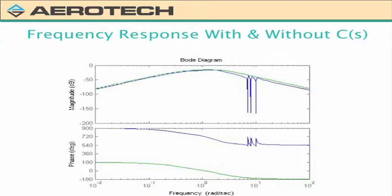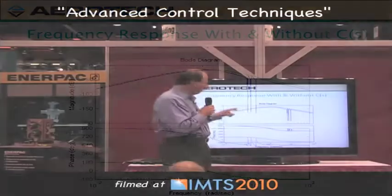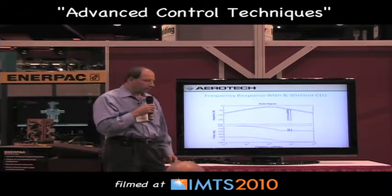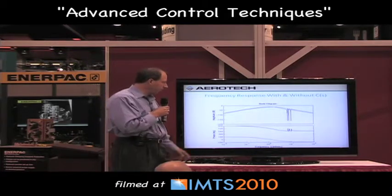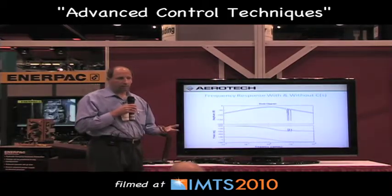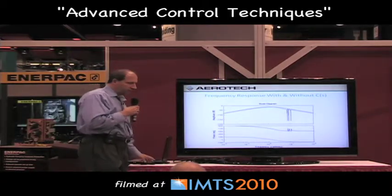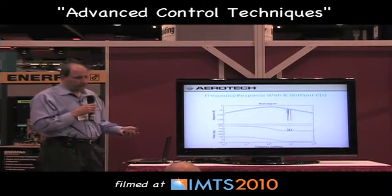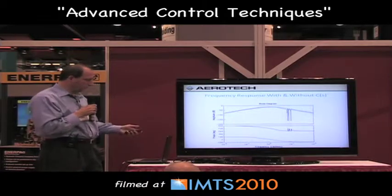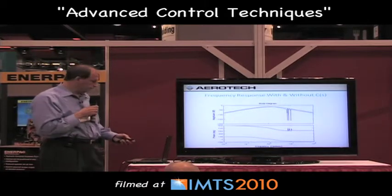Looking at the rejection curve in the frequency domain, the green line is what the normal curve looks like without the filter, and the blue line is what it looks like with the filter. At three distinct frequencies there is zero transmission, so something like ripple torque or mass imbalance would not affect the output of the system.